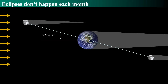The reason eclipses don't happen every month is because the orbital plane of the moon's orbit, with respect to the Earth's orbit around the sun, is tilted by about 5.2 degrees. That means the shadow of the moon does not always come across the Earth's face at new moon. If the moon is in exactly the same direction as the sun but inclined up by 5 degrees, that would be a new moon above the sun in the sky.